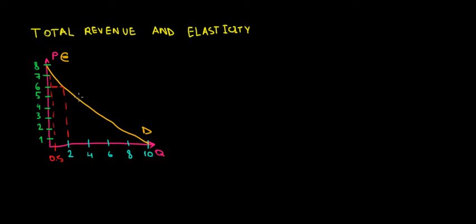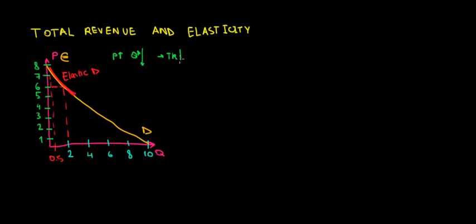Across this demand curve there's going to be a region where we are reactive, and we call this elastic demand. In this area we have an elastic demand. When we have elastic demand, if we want to increase our total revenues we have to offer lower prices, because if we offer higher prices quantity demanded goes down very much. So we want to decrease prices so that quantity demanded increases by more, thereby increasing total revenues.